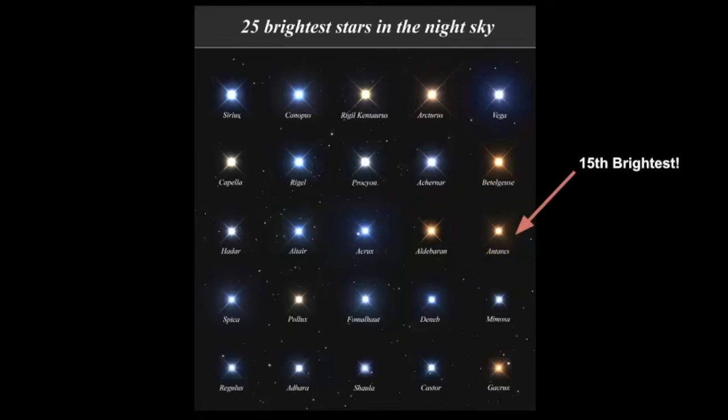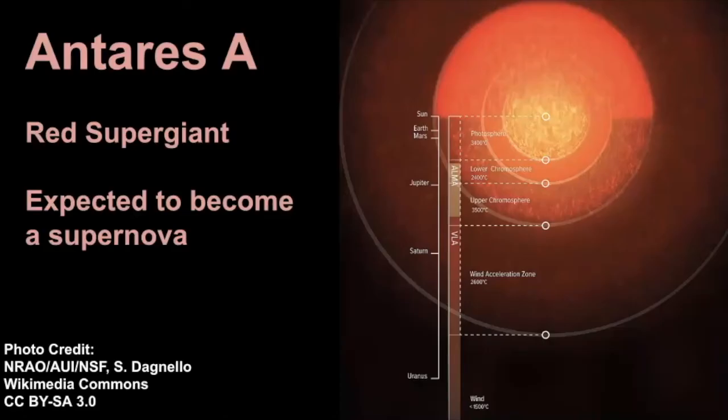And just to give you an impression, really impress upon you how large this star is. This is a diagram I found of Antares A, which again, it's classified as a supergiant star that is expected to become a supernova. It has enough mass to do so. And what this diagram is showing you is that the atmosphere, which is what the chromosphere and this area is, it is larger than the orbit of Saturn. So it's just such a huge star. And that's hard to even conceptualize.